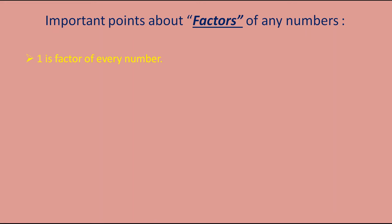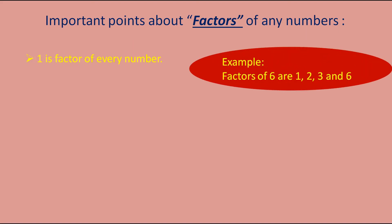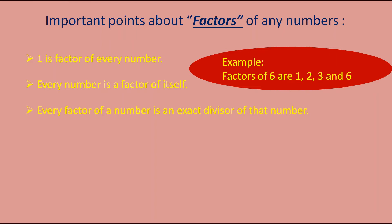The first point is: one is the factor of every number. For example, we found factors of six are 1, 2, 3, and 6 — we have written one as a factor of six. Same way, one is the factor of each and every number because we can divide any number by one. Next point: every number is a factor of itself. We have written six as a factor of six, because we can divide any number by itself. So, every factor of a number is an exact divisor of that number — that is the definition of factors.